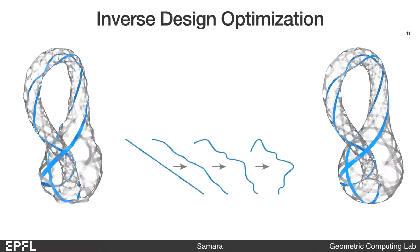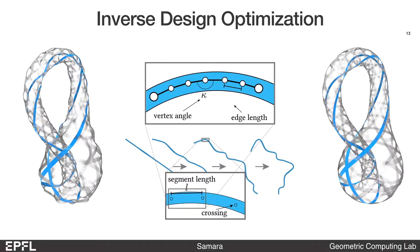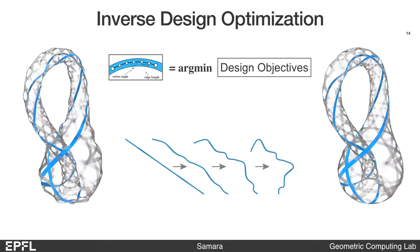In our inverse design method, the optimization parameters are the length and curvature of the ribbons. To compute these design parameters, we solve a multi-objective optimization problem.